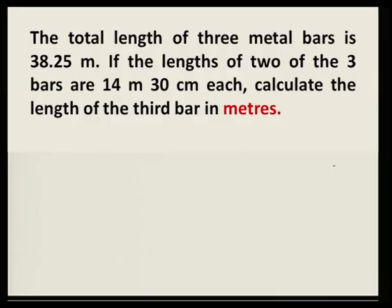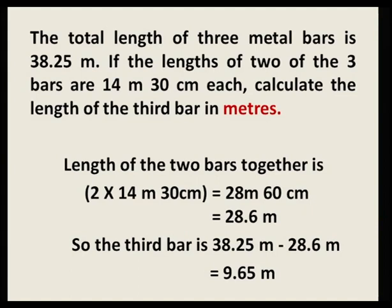Here is another example: the total length of three metal bars is 38.25 meters. If the length of two bars are 14 meters 30 centimeters each, calculate the length of the third bar in meters. The length of two bars together is 2 times 14 meters 30 centimeters equals 28 meters 60 centimeters. Converting 60 centimeters: 60 divided by 100 equals 0.6 meters, so 28.6 meters. The third bar is 38.25 minus 28.6 equals 9.65 meters.